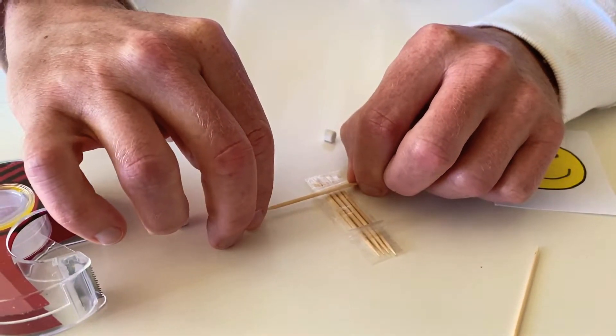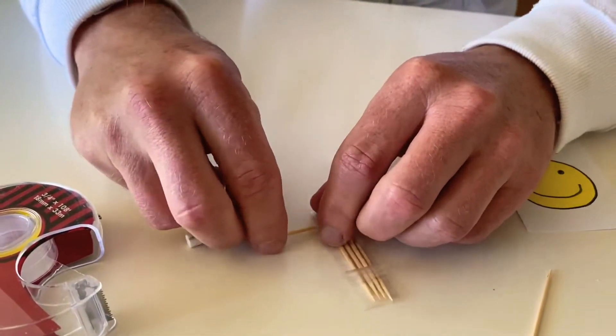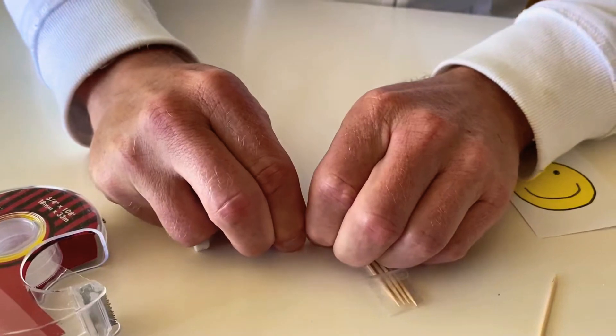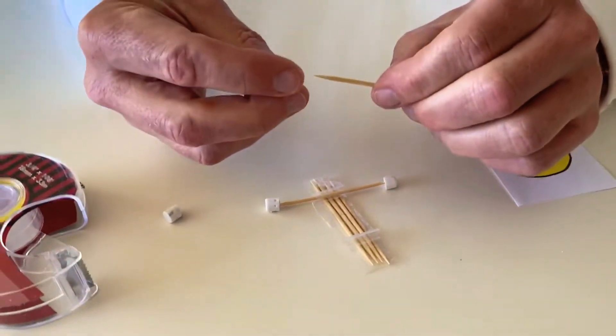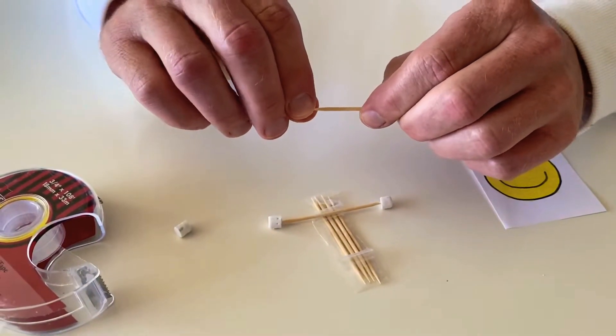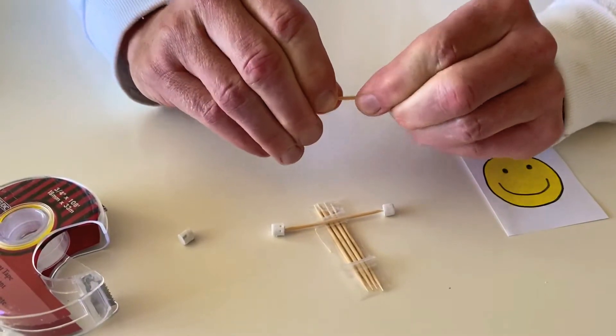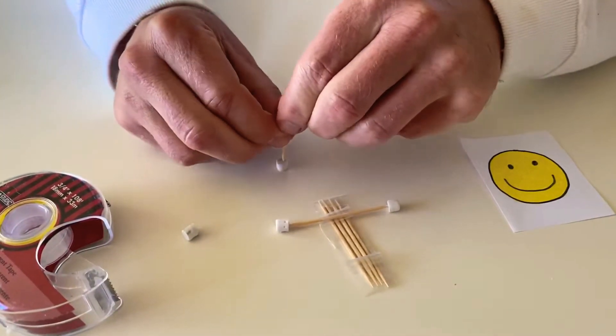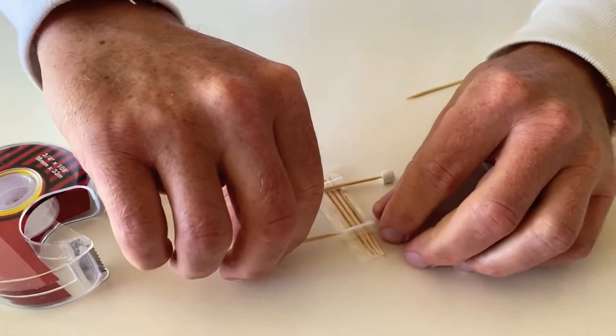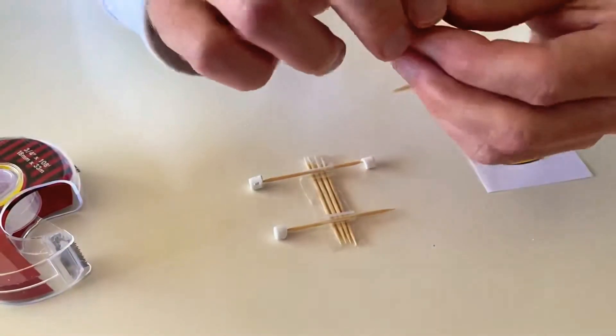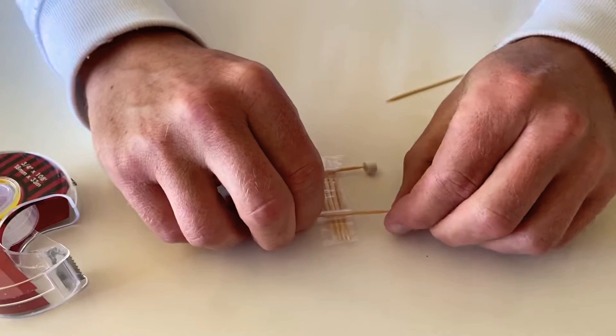I'm going to push in just like so. If you mess up or you break your toothpick, just get another one and try again. Take my second axle, my second wheel, push the first wheel in. If you're not sure if you want to make sure it went in far enough, you can always do this: push it through the axle, put the axle through, and then put the second wheel on.